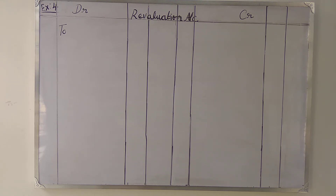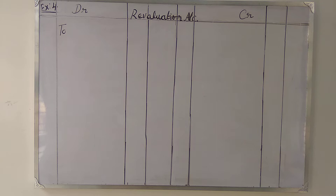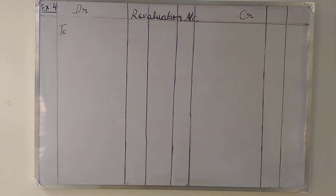They have given the sum as follows. Hari, Madhavan and Kesavan are partners sharing profit and loss in the ratio of 5:3:2. On 1st April 2017, Vanmati is admitted into partnership and the new profit sharing ratio is 4:3:2:1.